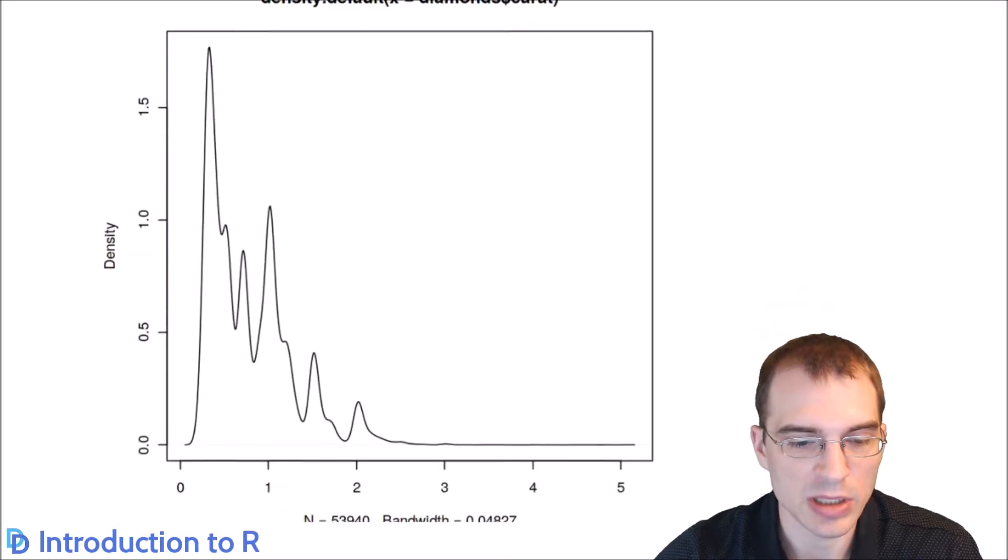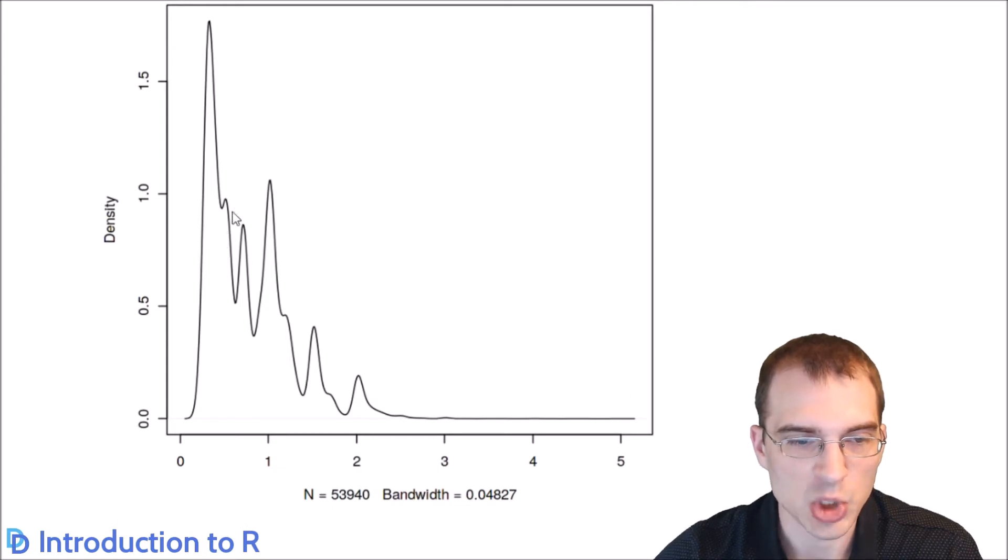And as we can see, it tells us something pretty similar. There's a spike of density at around maybe half to a third carat and around one. And then it trails off heavily as the diamonds get larger.